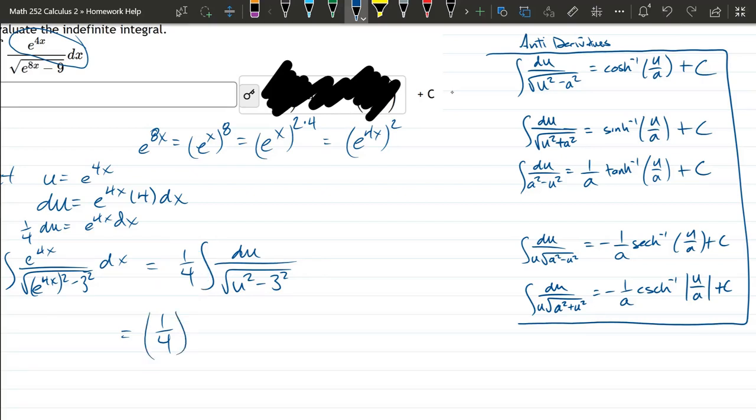Now, antiderivative formula, I'm just copying off the table on the right. Cosh inverse. A is 3. It's not 9. You're looking at a squared when you originally see the 9. So, a is 3. U is e to the 4x.